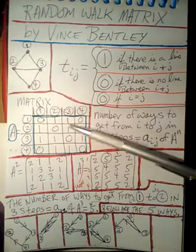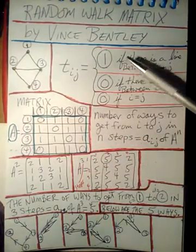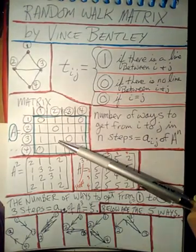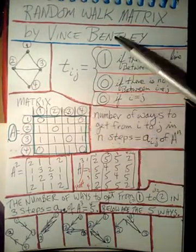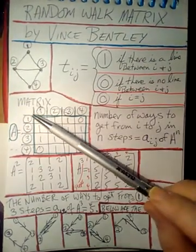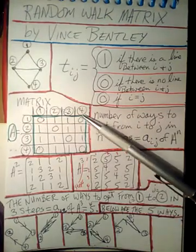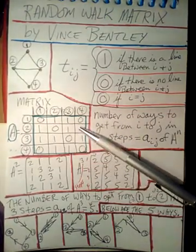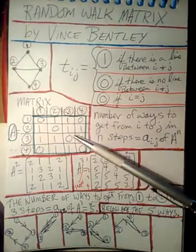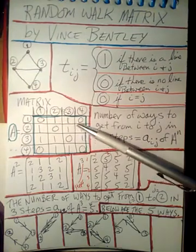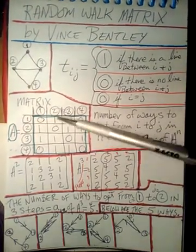Next we need to fill in the lower half of the matrix. We could apply the rules again, but a much faster approach — and this always works for a random walk matrix — is that it's always symmetric to the diagonal. So 1 pairs with 1, 0 with 0, and so on. The elements are always symmetric to the upper triangular matrix; this is a symmetric matrix at all times for all random walk matrices. So we've now generated our matrix A.